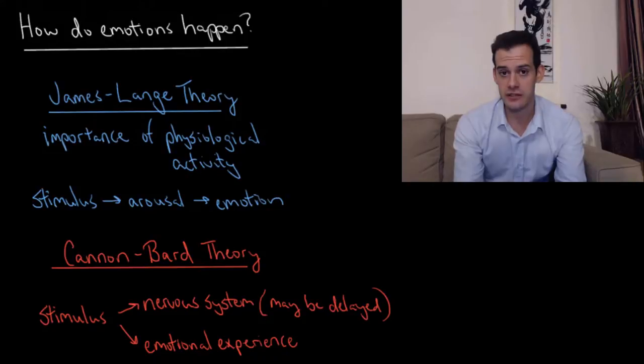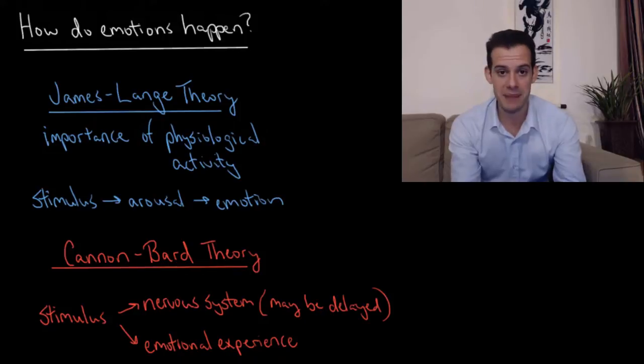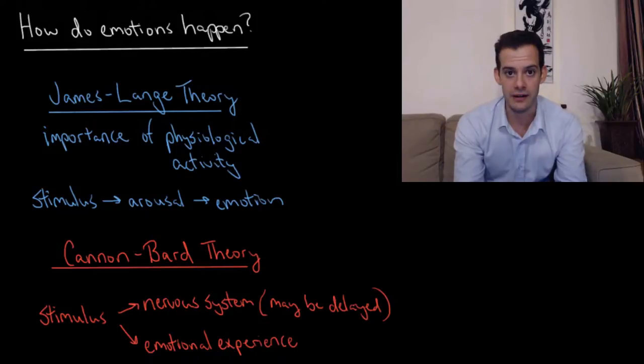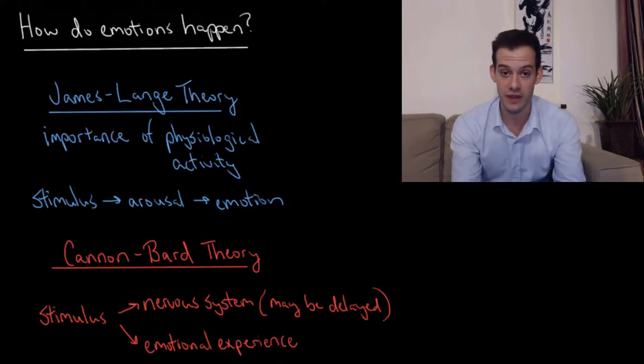Now the James-Lange theory is criticized, and one of the criticisms is the idea that we can have similar levels of physiological activity and not have the same emotion be experienced. So my heart can be pounding because I just saw a bear, or my heart can be pounding because I'm sprinting on a track as hard as I can. When I'm sprinting on the track, I'm probably not experiencing fear. I probably don't have the same emotional reaction even though I have similar physiological activity.